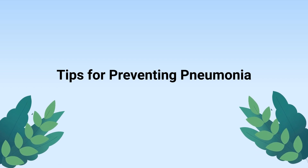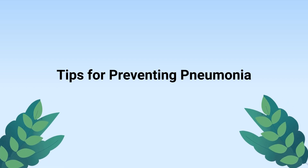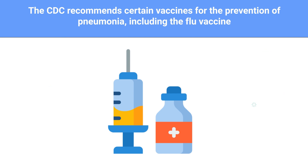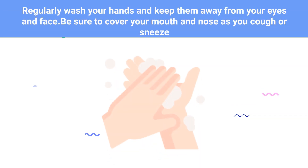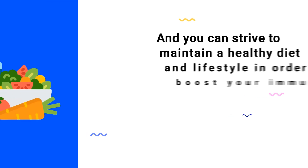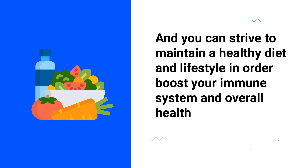The CDC recommends certain vaccines for the prevention of pneumonia, including the flu vaccine. Other ways to prevent pneumonia include quitting smoking, avoiding polluted air, regularly washing your hands and keeping them away from your eyes and face, covering your mouth and nose when you cough or sneeze, and maintaining a healthy diet and lifestyle to boost your immune system.